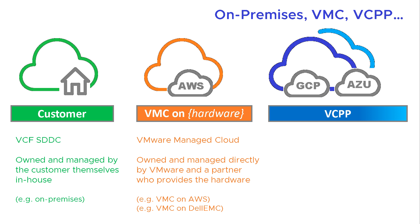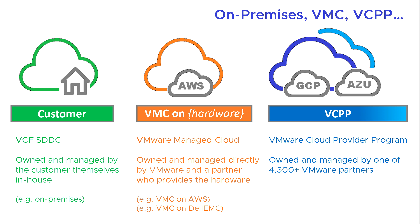The next option is VCPP — the VMware Cloud Provider Program — where the service is owned and managed by one of just over 4,300 VMware partners. An example would be the Azure VMware Solution or Google Cloud VMware Engine. VMware provides the software, but it's owned and operated by the partner. This differs from VMC, where VMware is directly involved in management. All three options — customer-managed, VMC-managed, and VCPP — are compatible because they all use the same software stack.